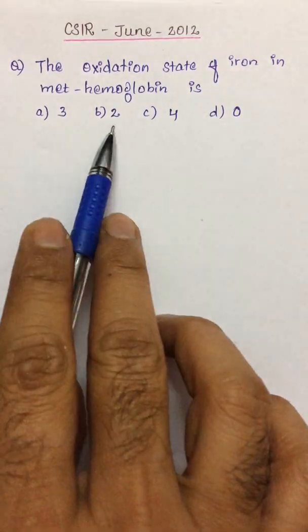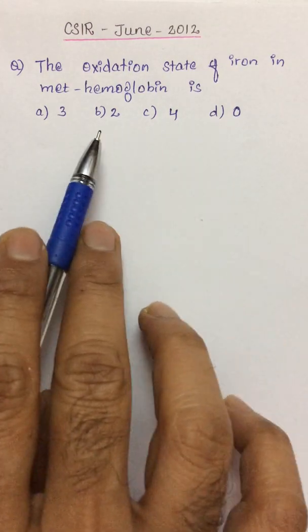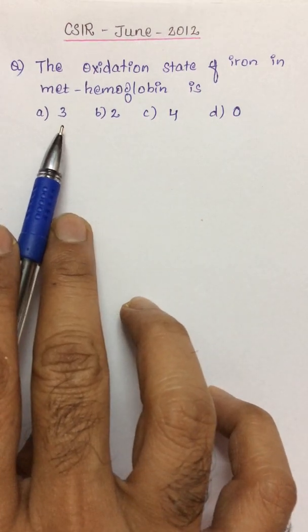Options given are 3, 2, 4, and 0. Well, the answer is very simple. The iron present in methemoglobin has an oxidation state of 3.